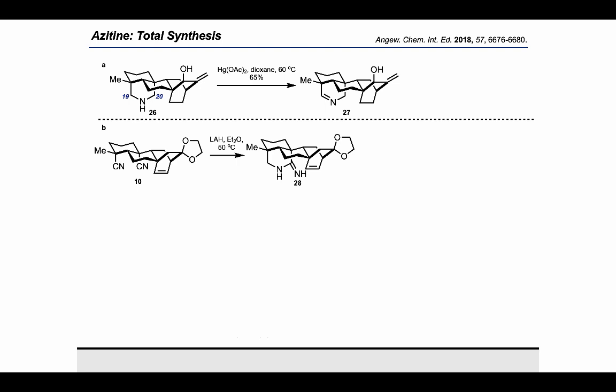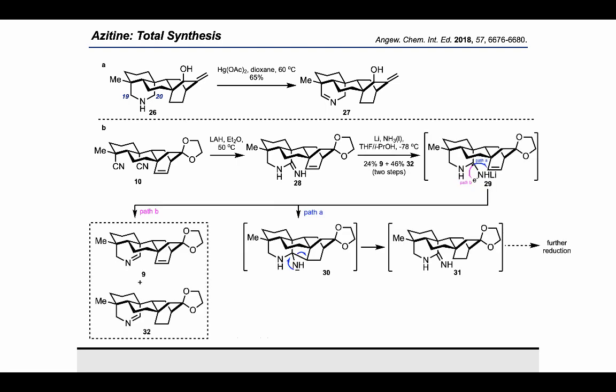As expected, reduction at C19 position took place first to give the amine, which then attacks the nitrile group intramolecularly to give amidine 28. After many trials of reduction conditions, we found the amidine can be smoothly reduced under liquid ammonia conditions. Actually, the 6-aminal piperidine was obtained after the reduction, but because of workup the amine was then formed. Very interestingly, apart from the formation of compound 9 in 24% yield, compound 32 was also observed.